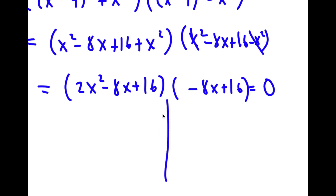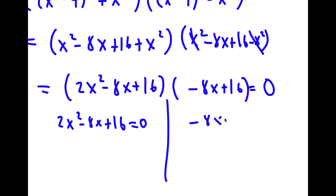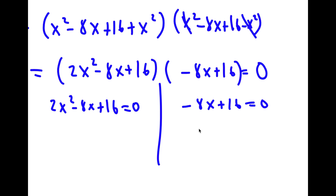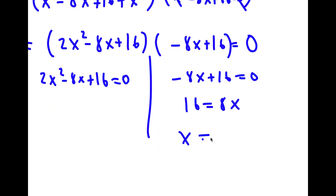This gives me two equations. I have 2x squared minus 8x plus 16 is equal to 0, and I have negative 8x plus 16 equal to 0. For negative 8x plus 16 equals 0, I add 8x on both sides, so I get 16 is equal to 8x, meaning x is equal to 2.